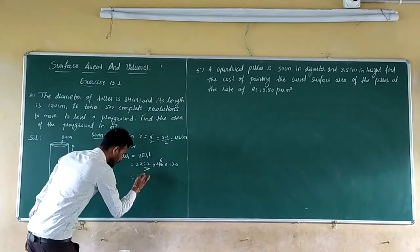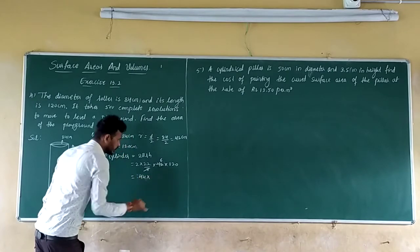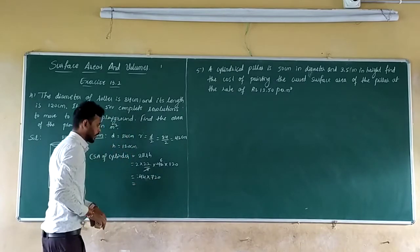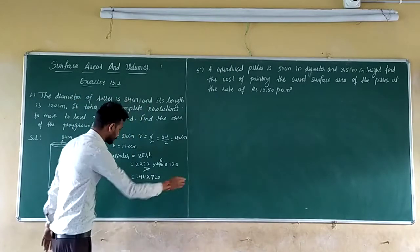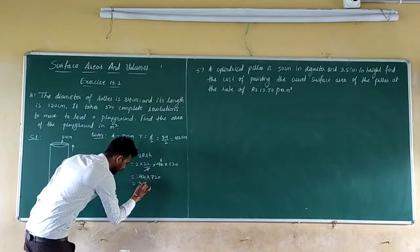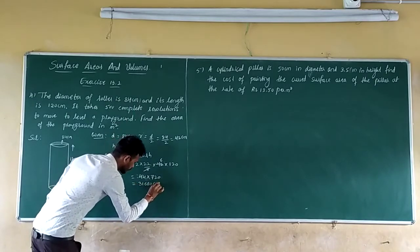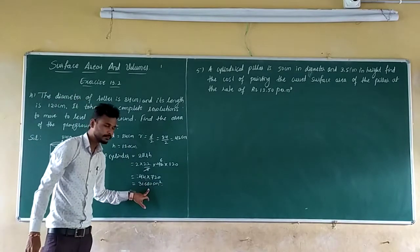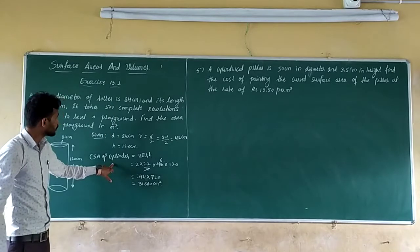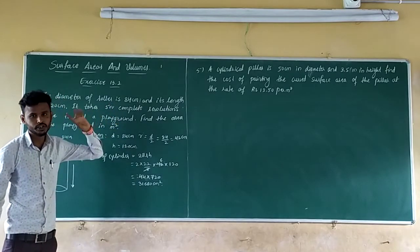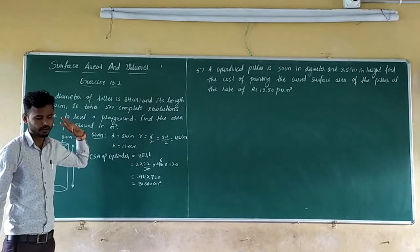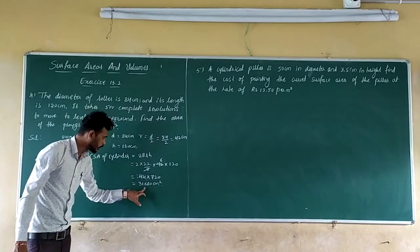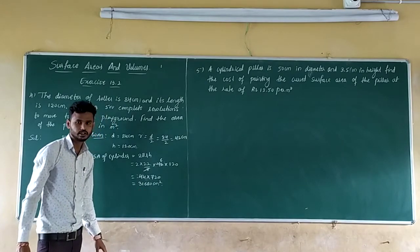So 2 into 22 equals 44. 44 into 6 into 120, you get 720. Multiply 44 into 720, you get 31,680 cm². This is the area completed by the roller in one revolution: 31,680 cm².